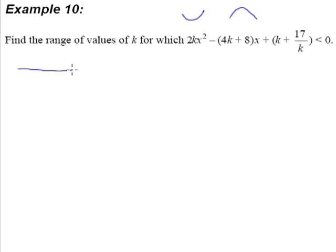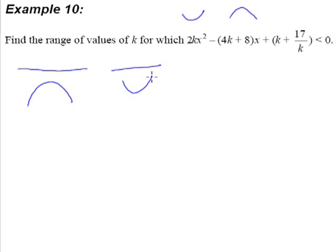So how can a quadratic expression be always underneath the x-axis? The only way out is this — you can't draw a U-shaped curve to be always underneath the x-axis, because a minimum quadratic curve will always go up to cut the x-axis. So a minimum quadratic curve can never be always underneath the x-axis.